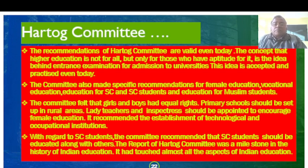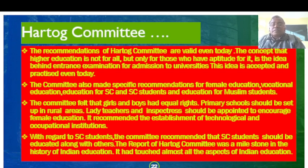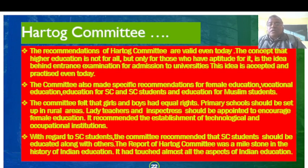The recommendations of the Hartog Committee are valid even today, and this idea is accepted and practiced by governments. The committee also made specific recommendations for female education, vocational education, education for Scheduled Caste and Scheduled Tribe students, and education for Muslim students. The committee felt that girls and boys had equal rights. Primary schools should be set up in rural areas, and lady teachers and inspectors should be appointed to encourage female education. It recommended the establishment of technological and occupational institutions. Regarding Dalit students, the committee recommended that they should be educated along with others. The report of the Hartog Committee was a milestone in the history of Indian education, touching almost all aspects.